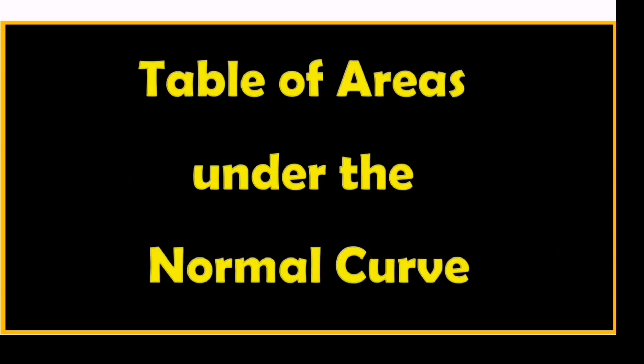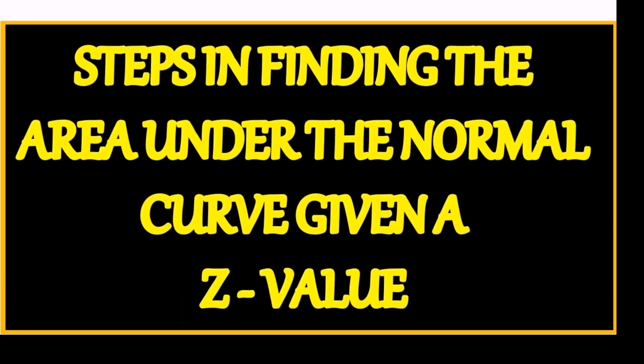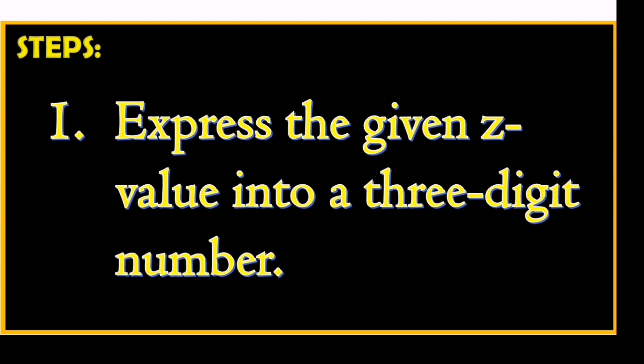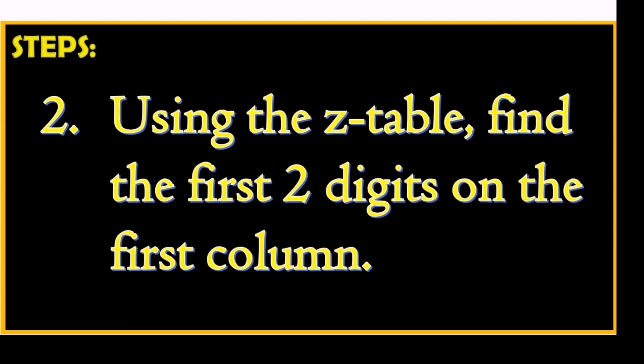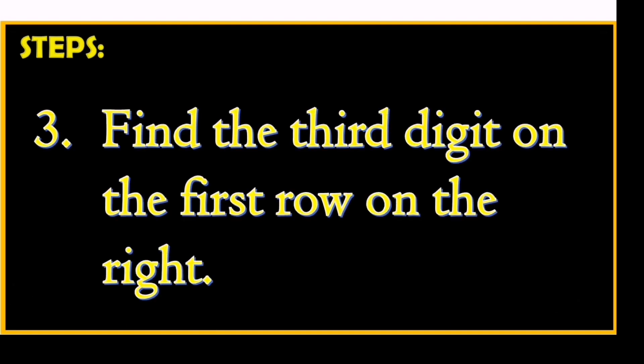Here is the table of areas under the normal curve. Step 1: Express the given z-value into a three-digit number. Step 2: Using the z-table, find the first two digits on the first column. Step 3: Find the third digit on the first row on the right.